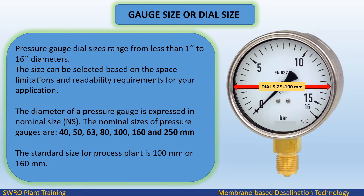Gauge size or dial size: Pressure gauge dial sizes range from less than 1 inch to 16 inch diameters. The size can be selected based on space limitations and readability requirements. The diameter is expressed in nominal size, with standard nominal sizes of 40, 50, 63, 80, 100, 160, and 250 millimeters. The standard size for a process plant is 100 mm or 160 mm.